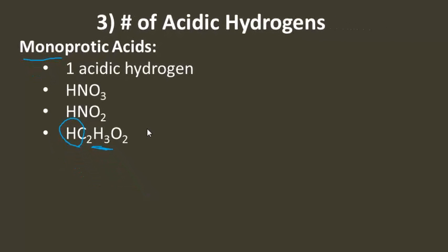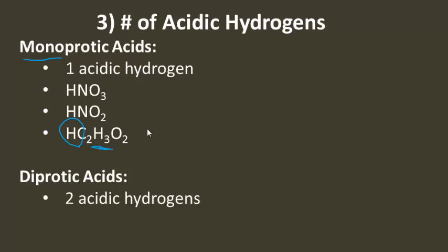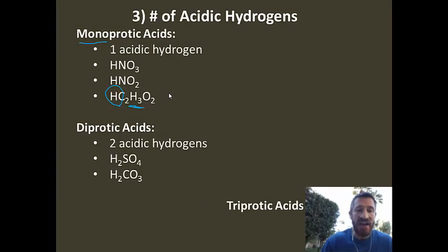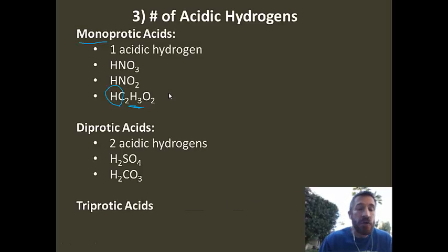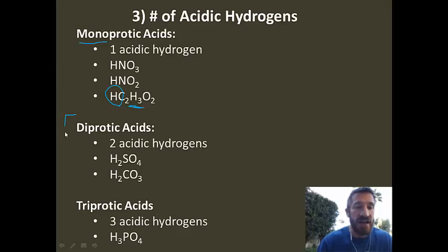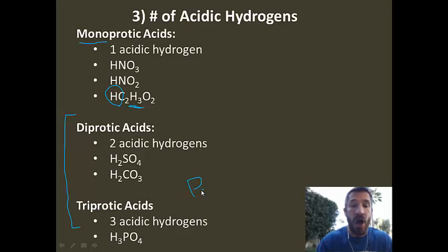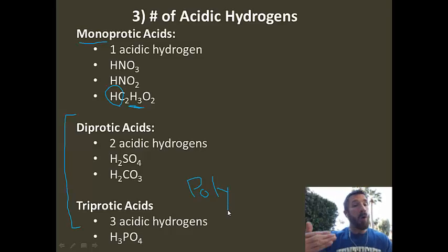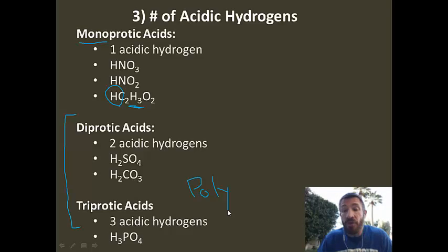The next category of acids contains two acidic hydrogens — we call those diprotic acids. Examples include sulfuric acid and carbonic acid. The last category would be triprotic acids — they have three acidic hydrogens — a good example being phosphoric acid, H3PO4. We can group the diprotic and triprotic together and call that group polyprotic (P-O-L-Y). So we either have a monoprotic acid — one acidic hydrogen — or a polyprotic acid — more than one acidic hydrogen.